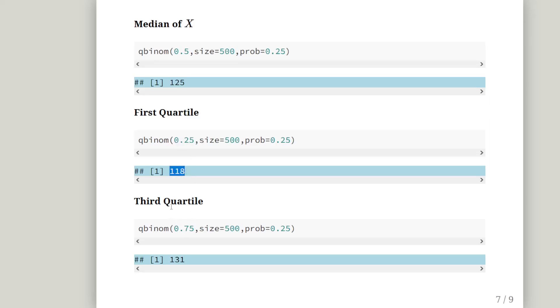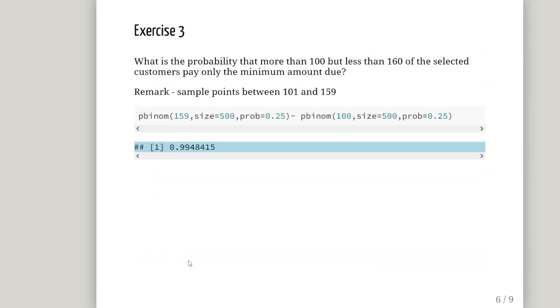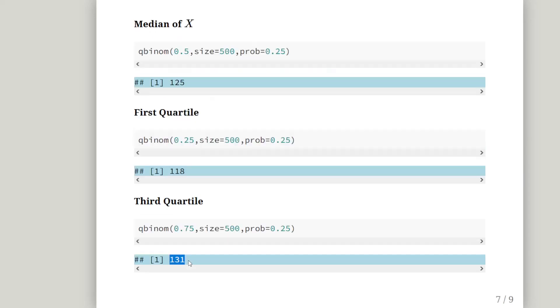And the third quartile, 0.75, again qbinom in both cases, and there it's 131. So roughly we expect 50% of the values of X to be between 118 and 131, thereabouts. It just gives us a rough guess about what we should expect. Just to compare and contrast with that last range of values there, 101 to 159. The 50% will correspond to 118 and 131.